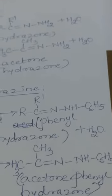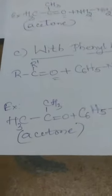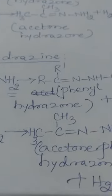The third condensation reaction is with phenylhydrazine (C6H5NHNH2). Ketones react with phenylhydrazine to give phenylhydrazone. O and H2 are eliminated as water to form C=N-NH-C6H5, giving R-C(R')=N-NH-C6H5 plus H2O. In all condensation reactions the byproduct eliminated is a water molecule. Taking acetone as an example, acetone reacts with phenylhydrazine to give acetone phenylhydrazone.